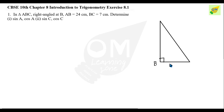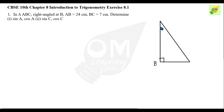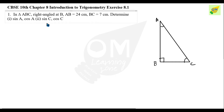So the vertices are A, B, and C. AB is 24 cm and BC is 7 cm. The right angle is 90 degrees. If we add all three angles, the total is 180 degrees. We are asked to find sin A, cos A, sin C, and cos C.